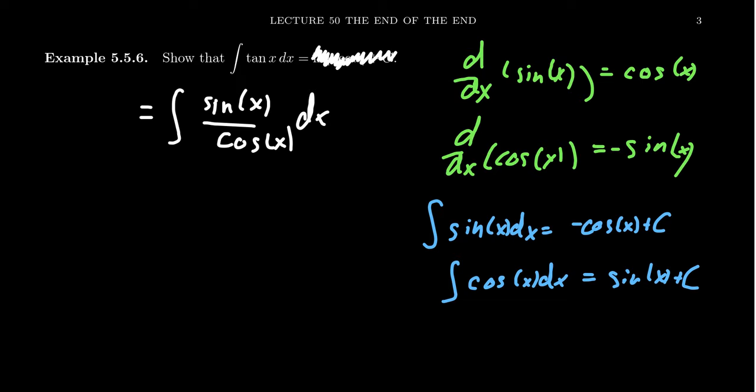So in this situation, we have sine over cosine. Let's take the denominator to be our u. u equals cosine of x. And then as we can see there on the screen, the derivative of cosine is a negative sine of x dx. And so although we don't have a negative sine present, oh, now we do.